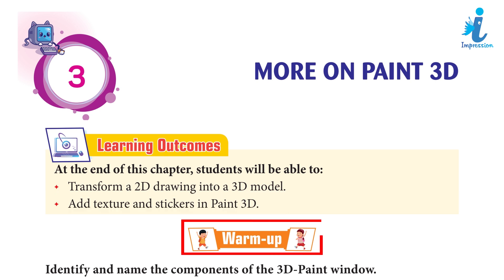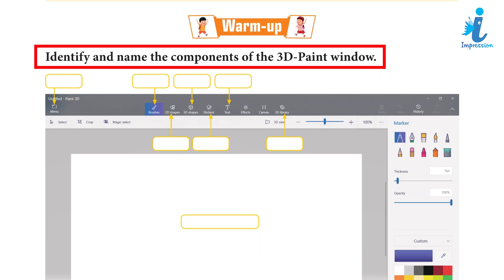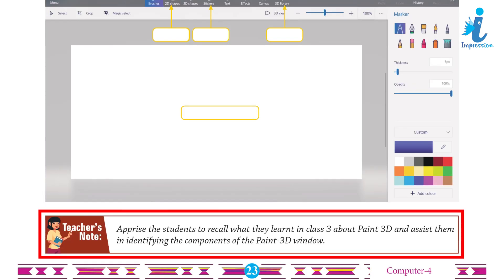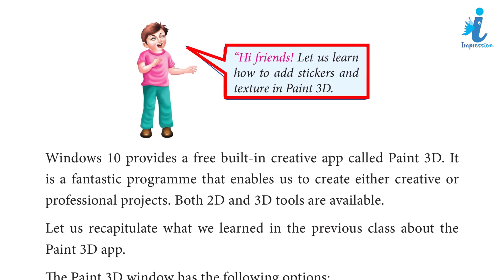Warm up: Identify and name the components of the 3D Paint window. Teacher's note: Apprise the students to recall what they learnt in class 3 about Paint 3D, and assist them in identifying the components of the Paint 3D window. Hi friends, let us learn how to add stickers and textures in Paint 3D.